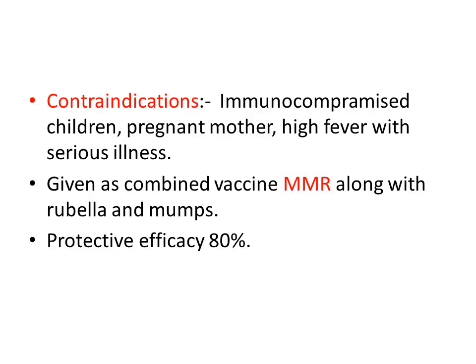Contraindications include immunocompromised children, pregnant mothers, and high fever with serious illness. It is given as a combined vaccine — MMR — along with rubella and mumps. Protective efficacy is 80 percent. This concludes the discussion on measles vaccine; next we will discuss about MMR.